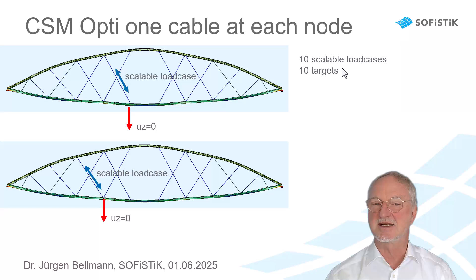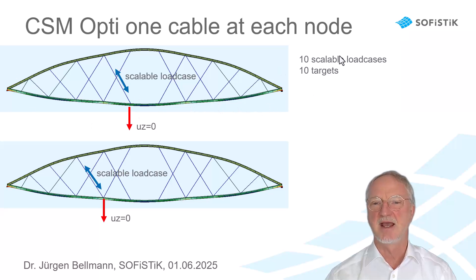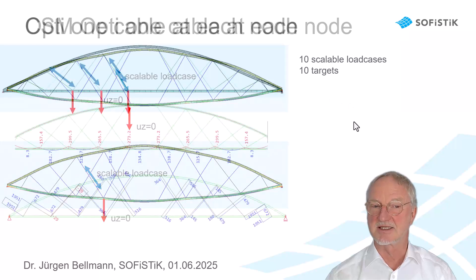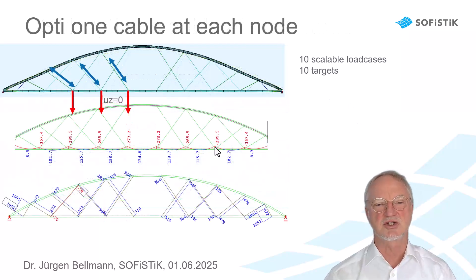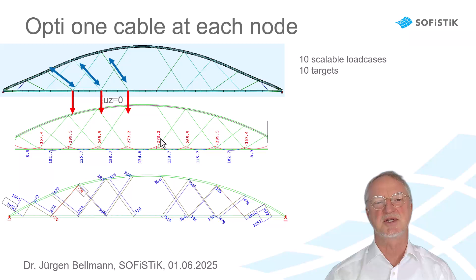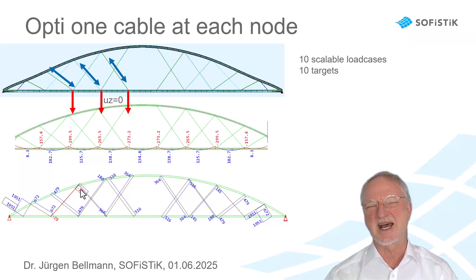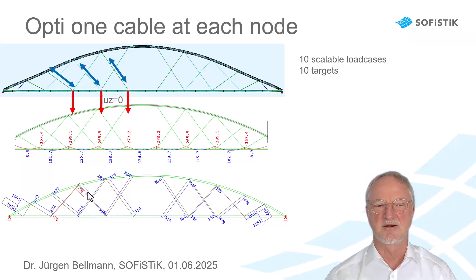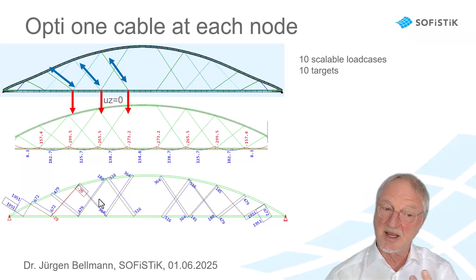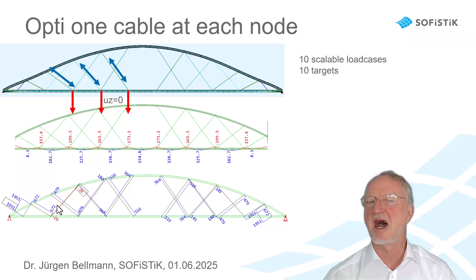So I have 10 targets and 10 scalable load cases. If I do so I reach the target very fine. The bending moment is now fine in the superstructure, but the cable forces are not very nice because here I even get a little bit of compression. That is because I only stress one of the two cables and the other cable I don't care about.